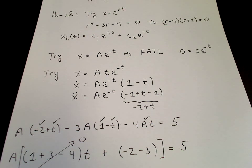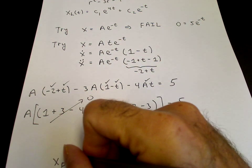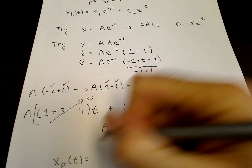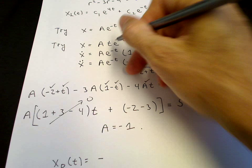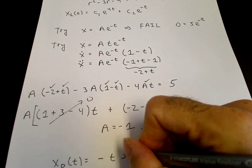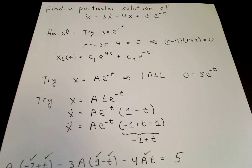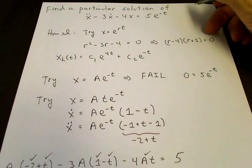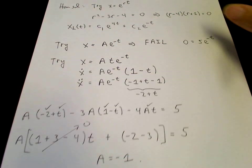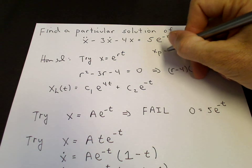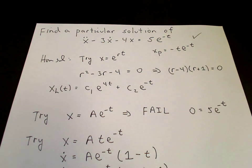So we find the particular solution is a times t times e to the minus t, where a equals minus 1. Therefore the particular solution is minus t times e to the minus t.